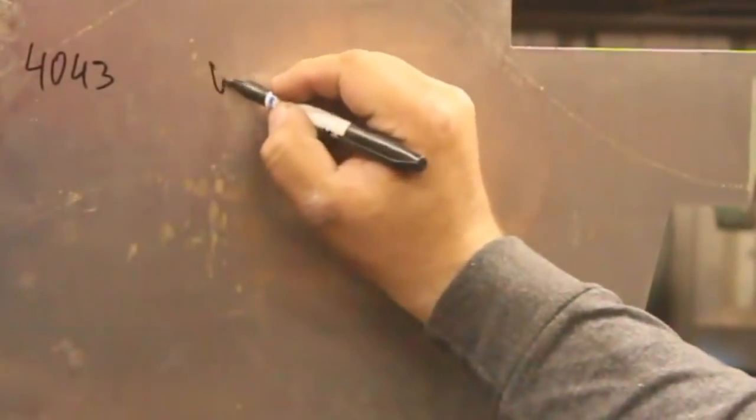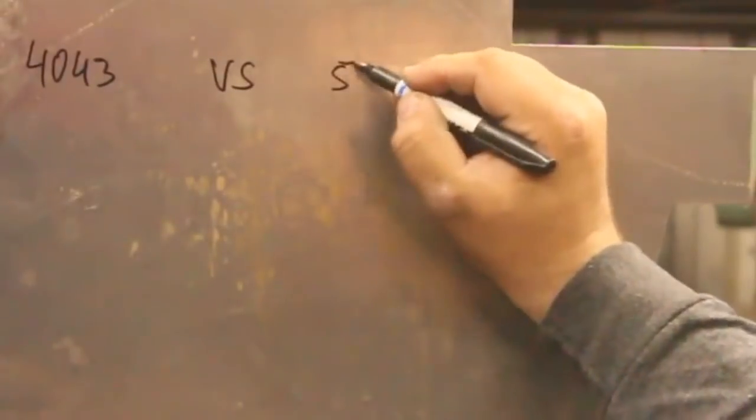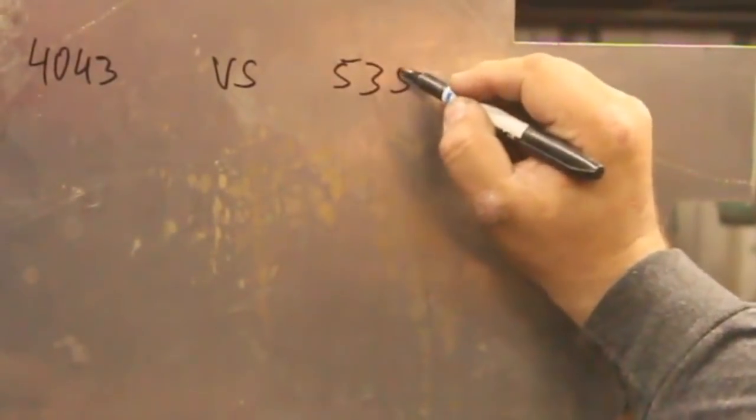We're covering 4043 and 5356, probably the two most popular aluminum filler rods, and see what they do and what their limitations are. I know there's a ton more out there, those two are by far the most common.